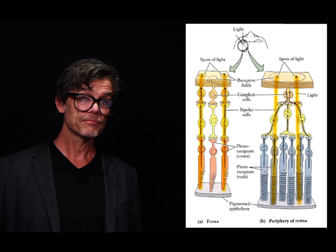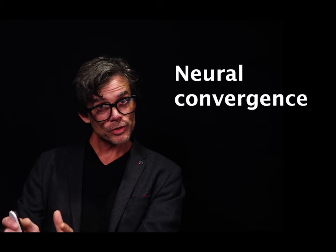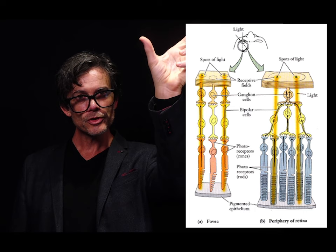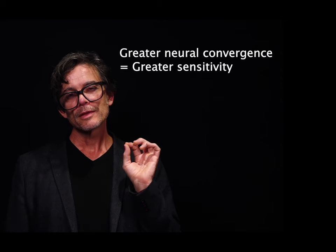Some ganglion cells receive input from a large number of photoreceptors — this is common in the visual periphery. Other ganglion cells receive input from a single or just a few photoreceptors, and this is far more common in the fovea. This difference in the amount of neural convergence has functional implications. When many photoreceptors converge onto a single ganglion cell, such as in the periphery, that ganglion cell may be more likely to respond than one which receives input from just one photoreceptor. This produces an increase in sensitivity.